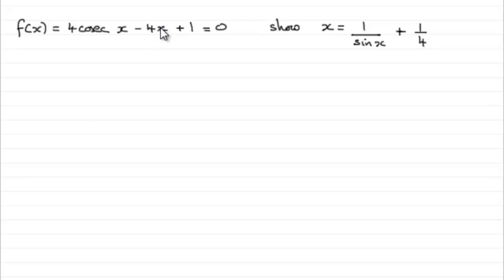So how am I going to make this x the subject? Well, I'm going to rewrite 4 cosec x as being 4 over sin x, and then I'm going to just have the 1, and I'm going to add 4x to both sides.